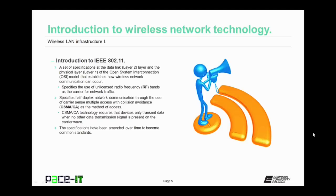The 802.11 standard specifies the use of unlicensed radio frequency bands as the carrier for network traffic. It also specifies that network communication will be half-duplex in nature, and that it will be implemented using Carrier Sense Multiple Access with Collision Avoidance, or CSMA-CA. CSMA-CA requires that devices only transmit data when no other data transmission signal is present on the carrier wave.